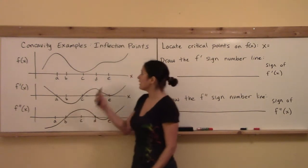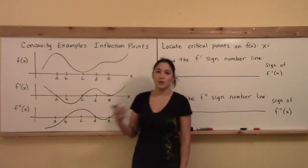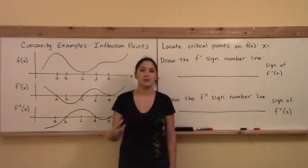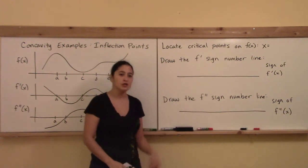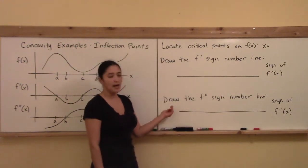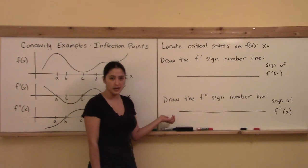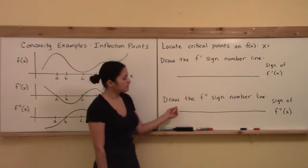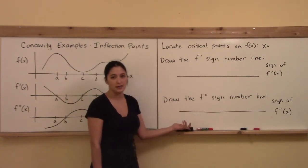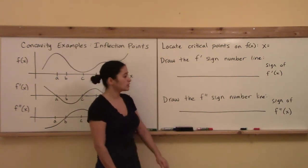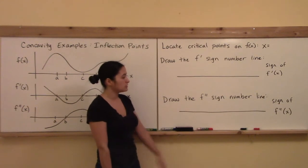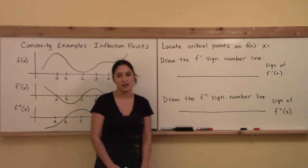An inflection point is a point at which the concavity changes. The concavity is represented by the sign — positive or negative — of the second derivative. If this sign changes, we have a point of inflection, because an inflection point is a place where concavity changes from positive to negative concavity.